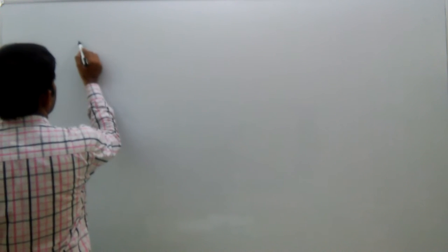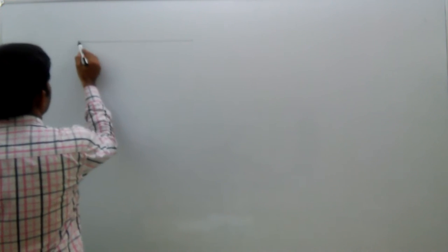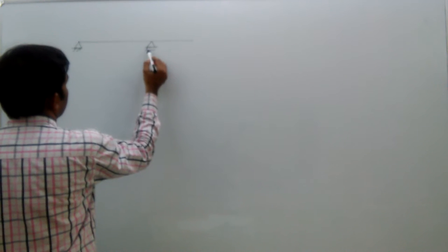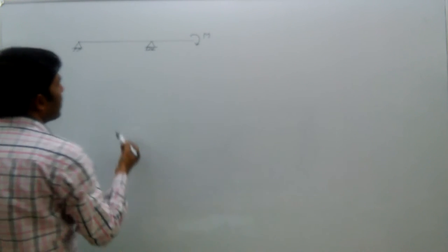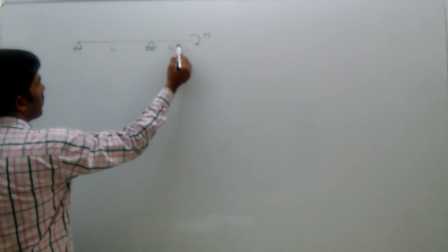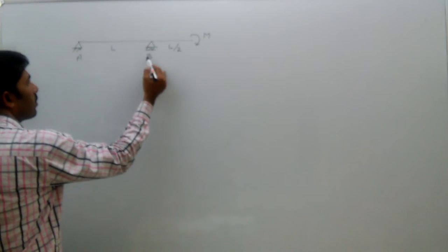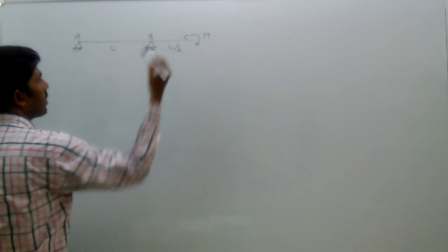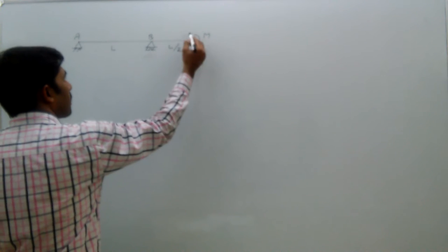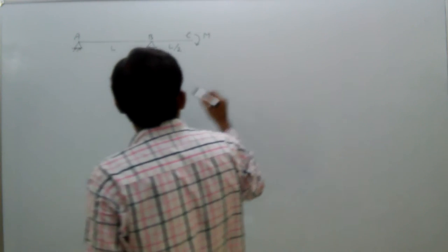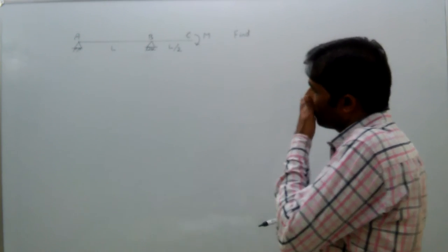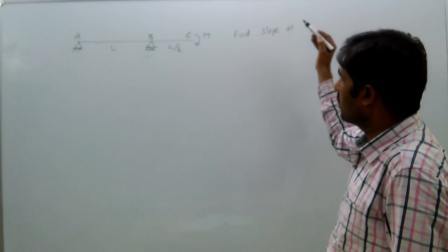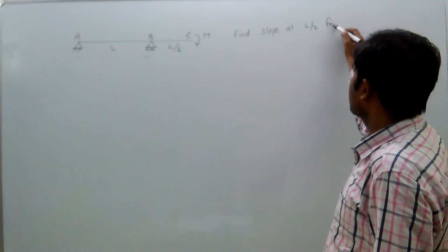An overhanging beam with one side overhang is shown. A couple of moment M is acting at this point. This is L, and this is L by 2. Point A, B, and C are marked. We need to find the slope at L by 2 from A.